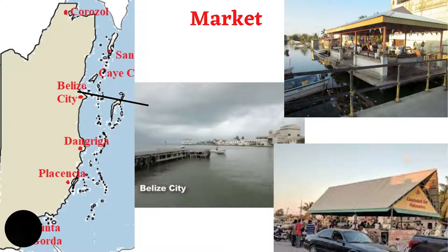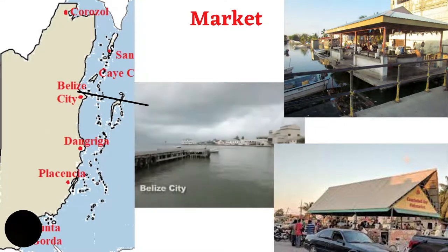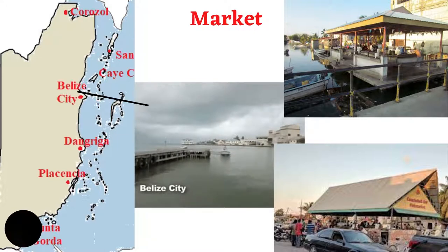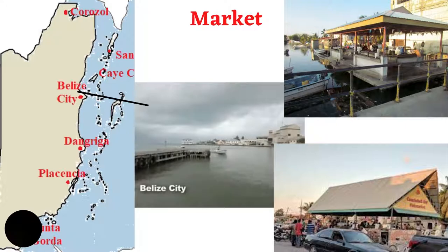Only about 10% of the lobster, conch, and shrimp are sold on the local market. The majority of fish sold on the local market is finfish. The main fish market is the Conch Shell Bay fish market, located in downtown Belize. It sits on a small bridge over a canal fed by the Belize River. Fishermen come right up to the curb in their boats to sell their fish, and fishers then clean and prepare the day's catch. Other fish markets are located in Corozal Town, Dangriga, and Punta Gorda Town, shown on the map.